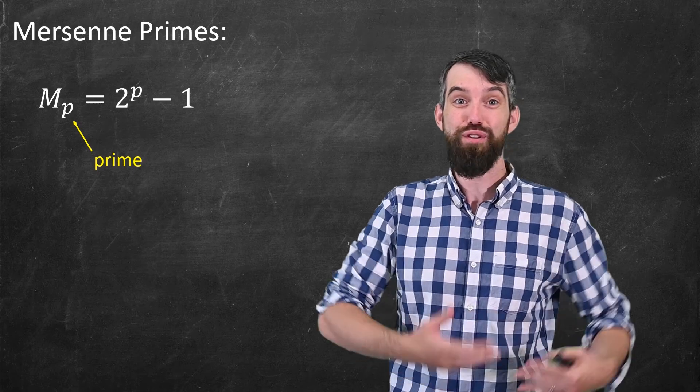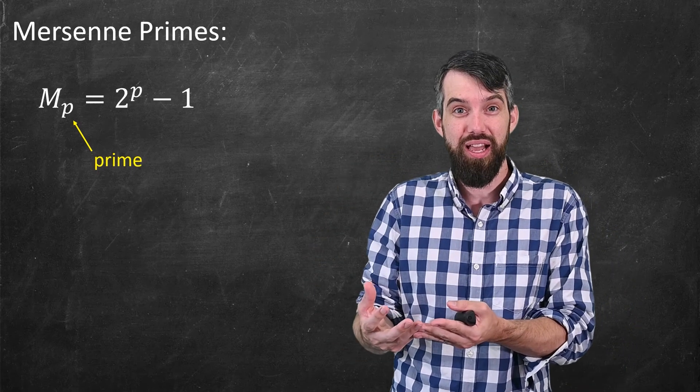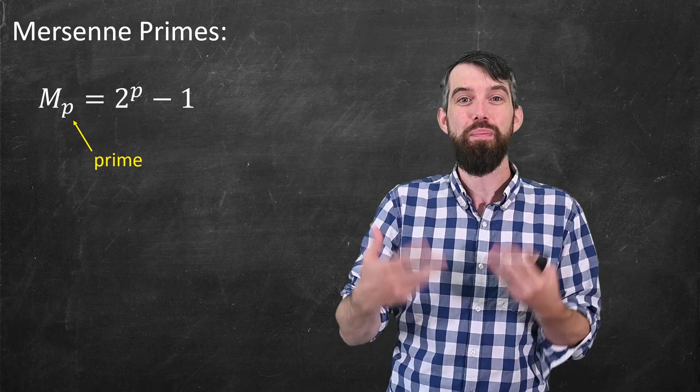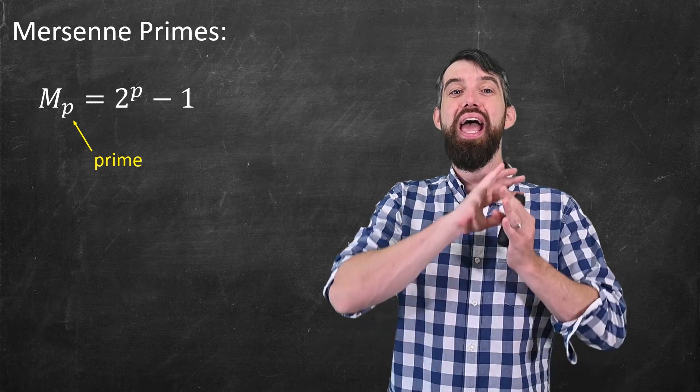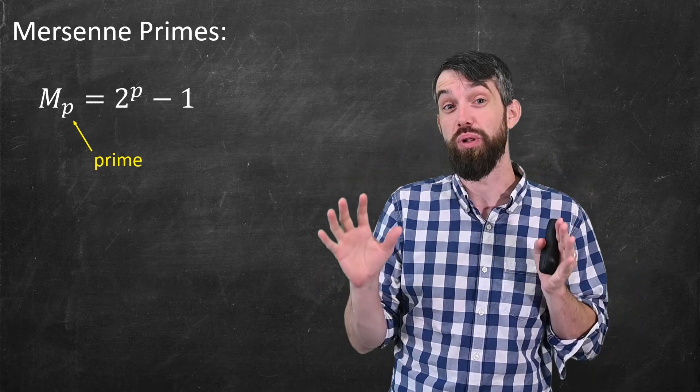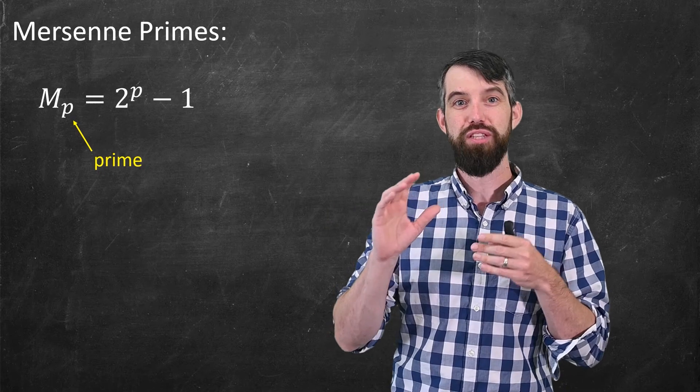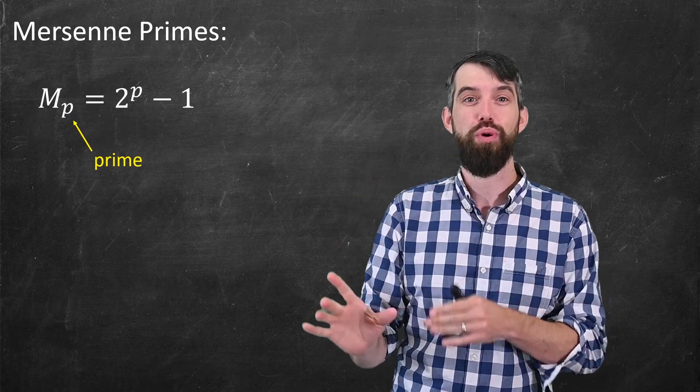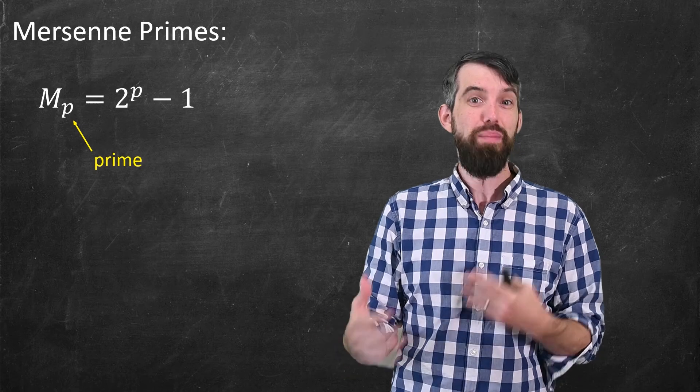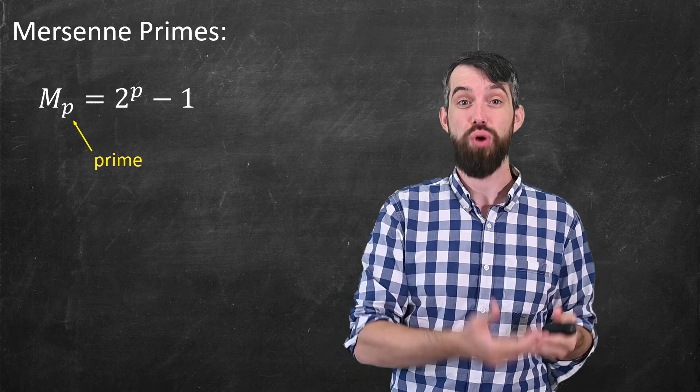So basically what you're doing is if you have one prime number p, you can take 2 to the power of that minus 1 and get an exponentially larger possible prime number. Now, it's very important that I say possible prime number here. For example, let me compute out the first few Mersenne primes.